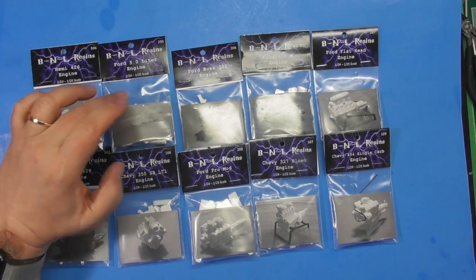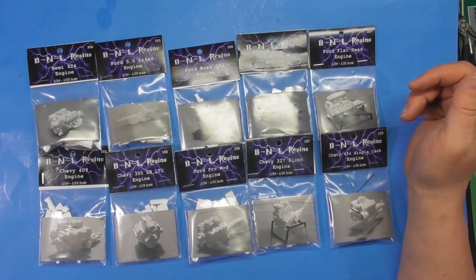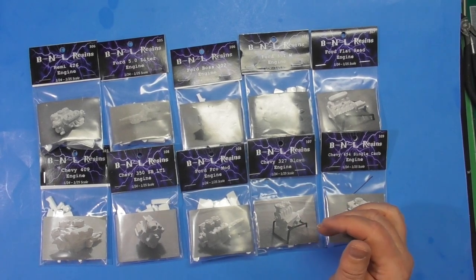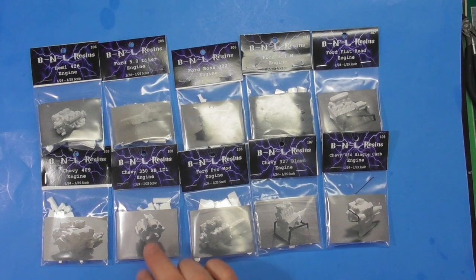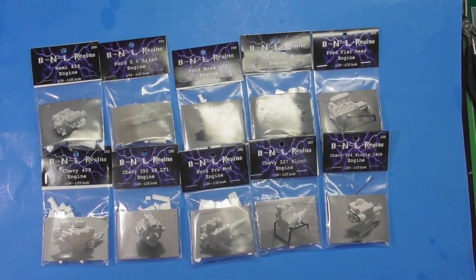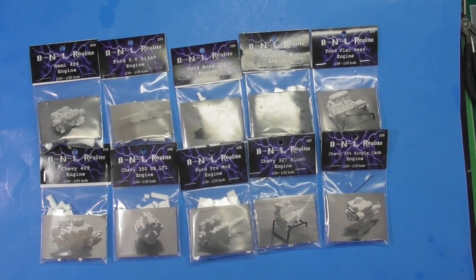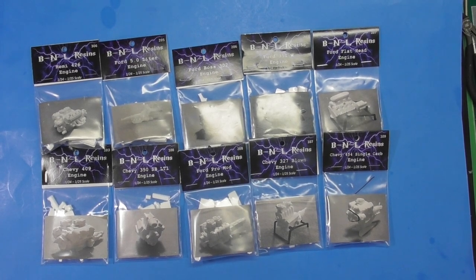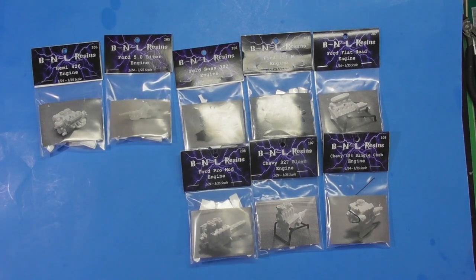You get your 426 Hemis, your 5-liter Fords, 302 Boss engine, flathead, 351 Windsor, Chevy 454 with single carb, 327 blown mod engine, Chevy 350 LT1, Chevy 409 with dual carbs. And there's many, many more. There's many racing engines which I didn't get. I'm not really into racing engines, but we're going to open up a couple of these and take a look.